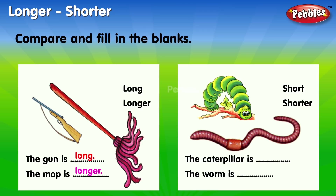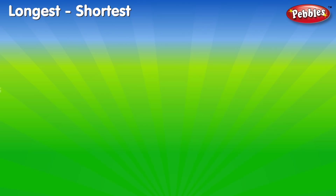Short, shorter. The caterpillar is blank short. The worm is blank shorter.